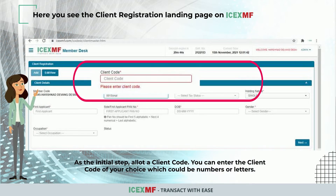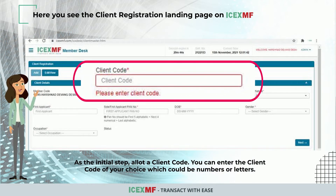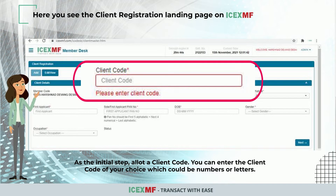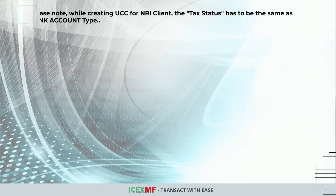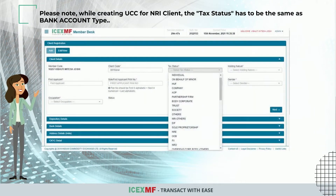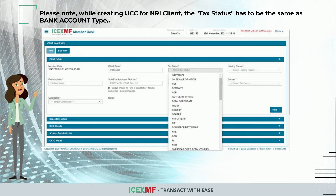As the initial step, under client code, you can enter the client code of your choice, which could be numbers or letters. Please note that while creating a UCC for an NRI client, the tax status has to be the same as the bank account type.